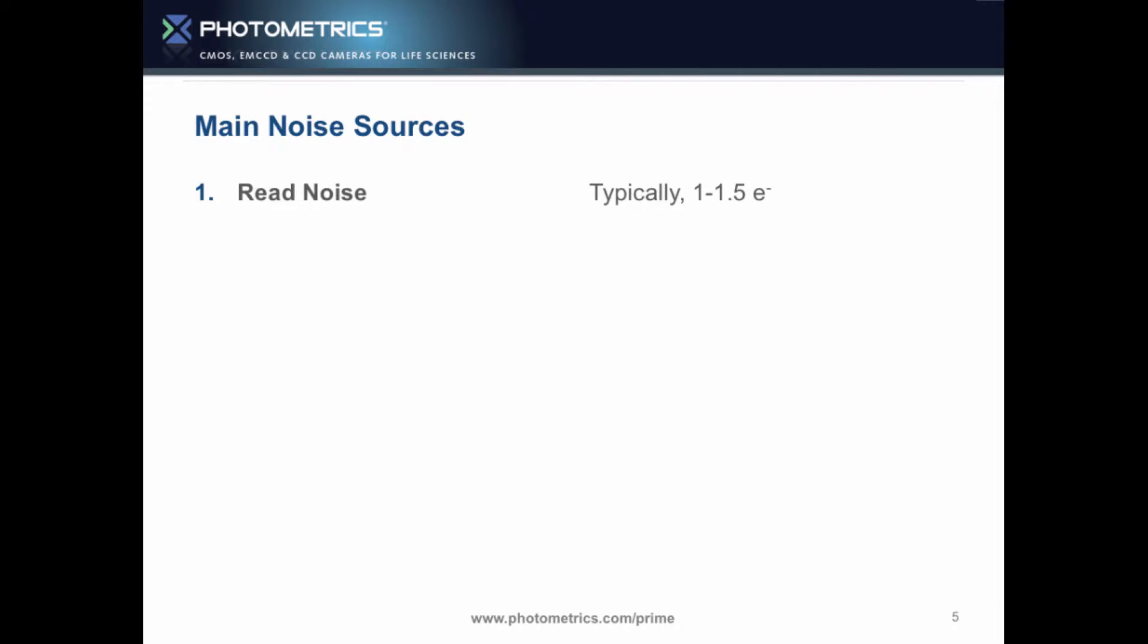So read noise, typically one to one and a half electrons. We actually have some of the lowest statistics for our fastest mode. It's really nice to be market leading on that. Again, on the dark current, this is again a very small number. We have the great cooling. We're 0.06 electrons per pixel per second or less.